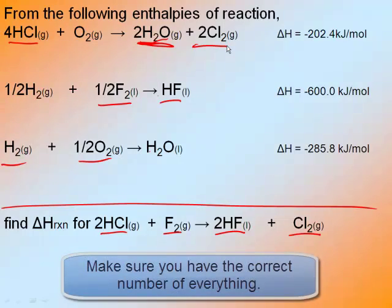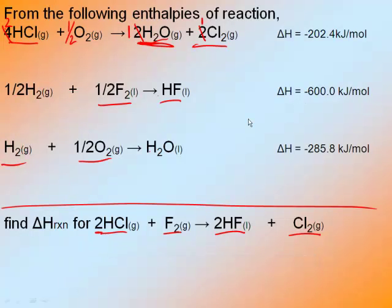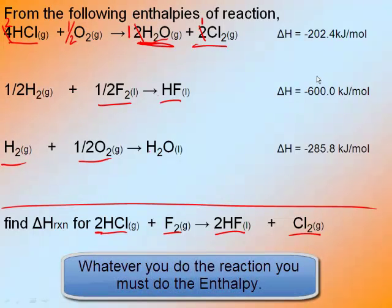Step number two is make sure I have the correct number of everything. I look at HCl and I see that I only need two HCls, but up here I have four HCls. How do you turn a four into a two? Simply divide by two. So if I divide this reaction by two, I now have two HCls. If I divide one thing by two, I have to divide the entire reaction by two — so this one becomes a half, my H2O becomes one, and my Cl2 becomes one. Whatever you do to the reaction, you must do to the delta H, so I divide my delta H by two as well.